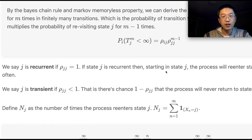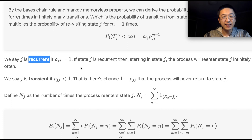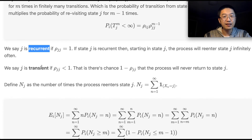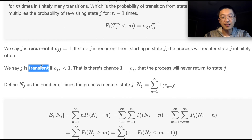Now let's officially define recurrent and transient states. State j is recurrent if, starting from state j, it will always return to state j in finitely many steps — that is, ρ_jj = 1. If state j is recurrent, then starting in state j, the process will re-enter state j infinitely often. State j is transient if ρ_jj < 1 — there is a chance (1 − ρ_jj) that the process will never return to state j.